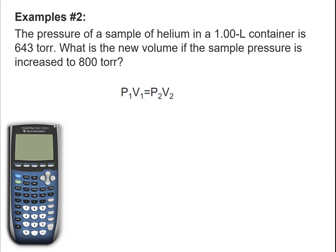Okay, second example. The pressure of a sample of helium in a 1.00 liter container is 643 torr. So torr is a unit of pressure. What is the new volume if the sample pressure is increased to 800 torr?